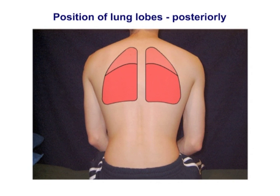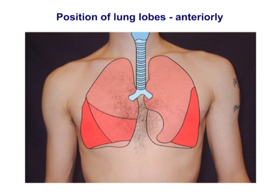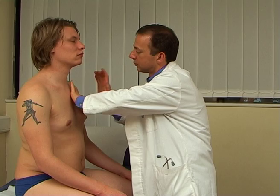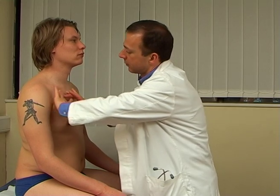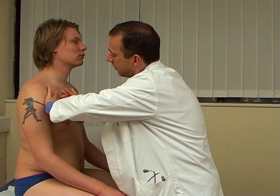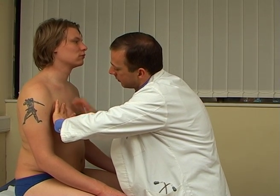Remember that the posterior thoracic wall mostly overlies the lower lobes, whilst the anterior thoracic wall overlies the upper lobes. Press your finger firmly on the patient's chest in the intercostal spaces when percussing.